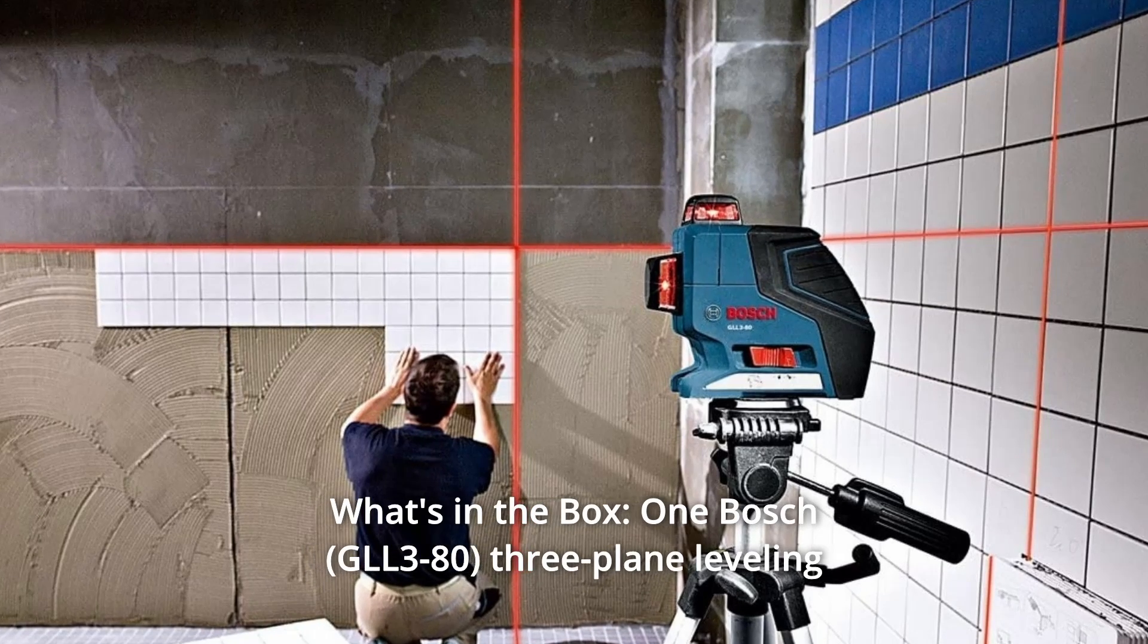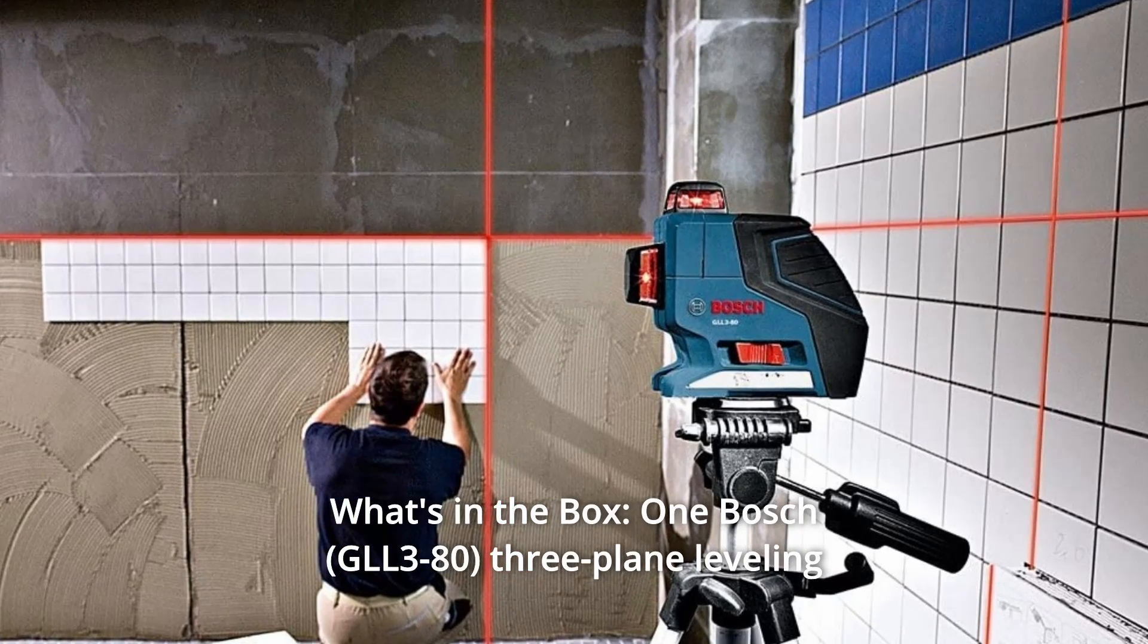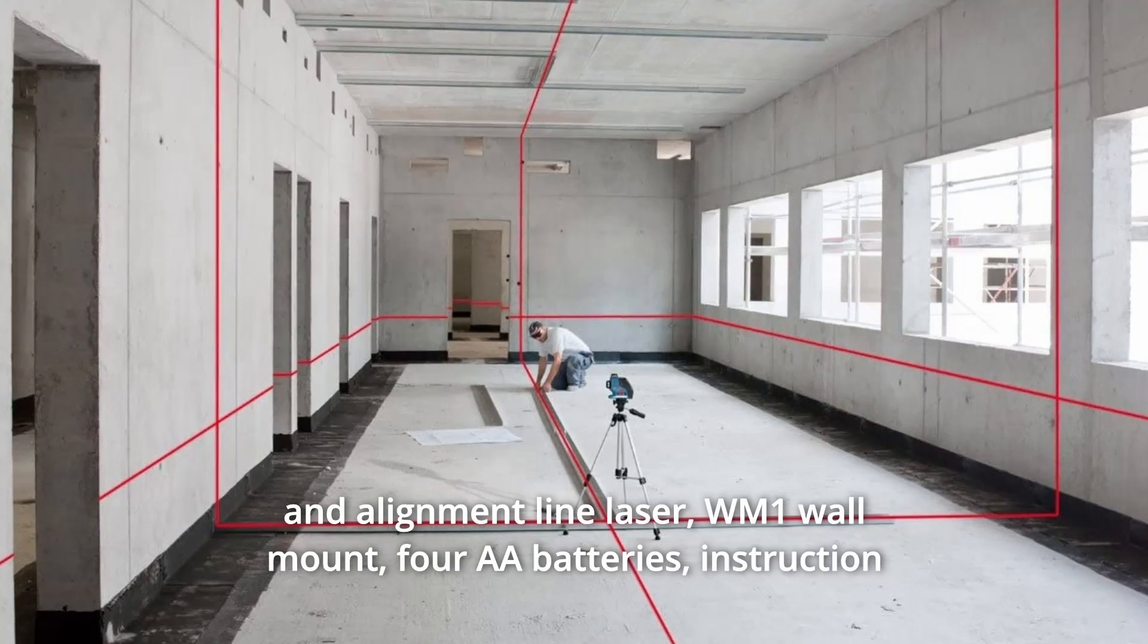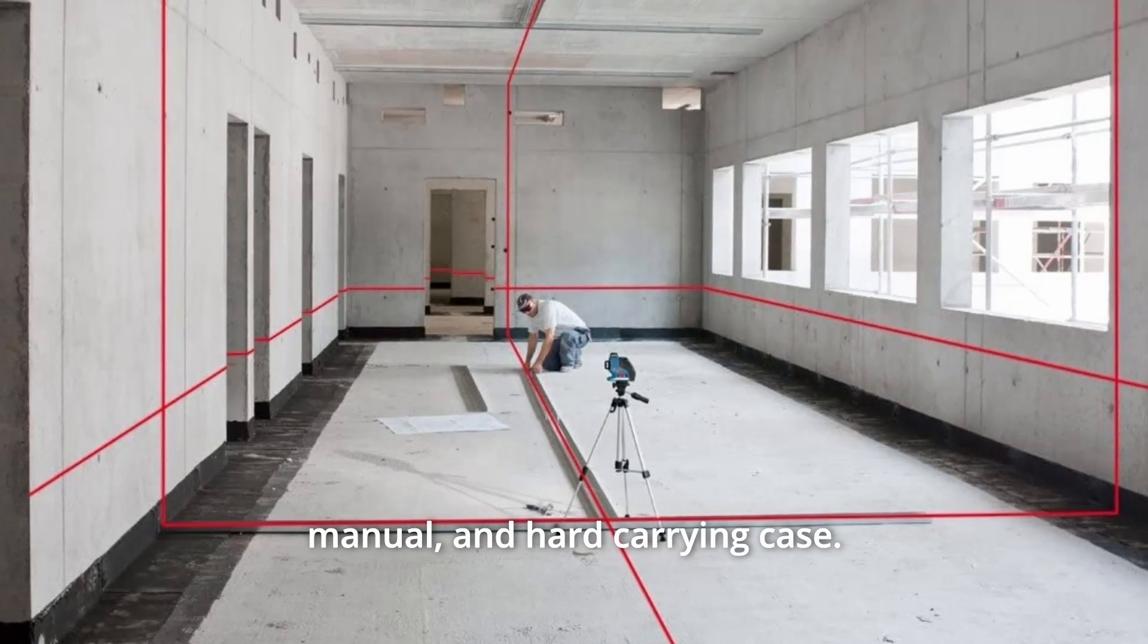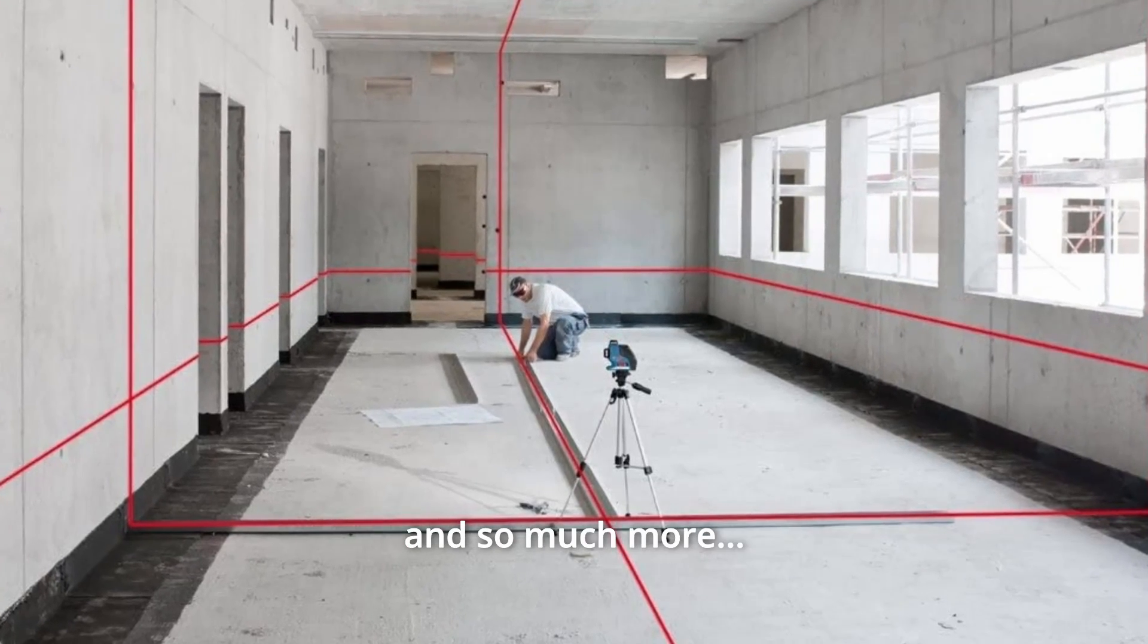Number 6: What's in the Box. One Bosch three-plane leveling and alignment line laser, WM1 wall mount, 4 AA batteries, instruction manual, and hard-carrying case, and so much more.